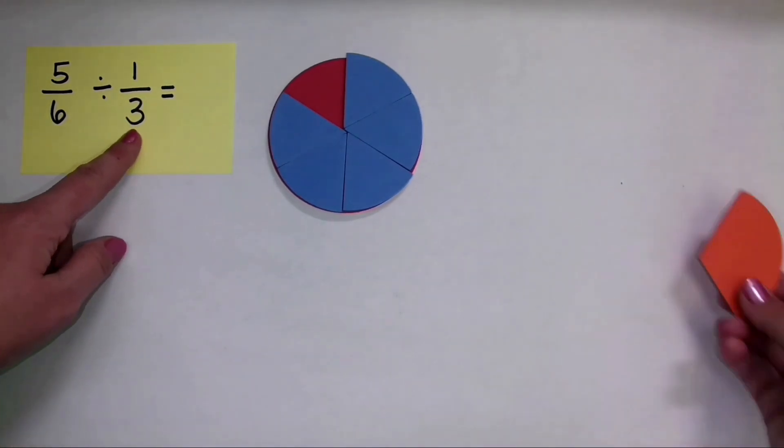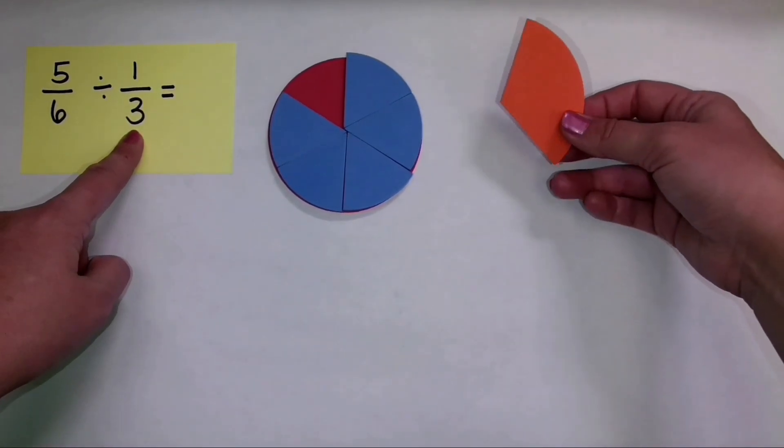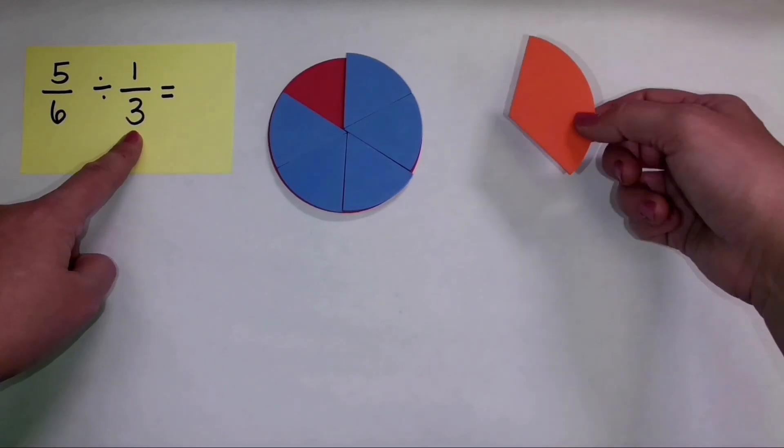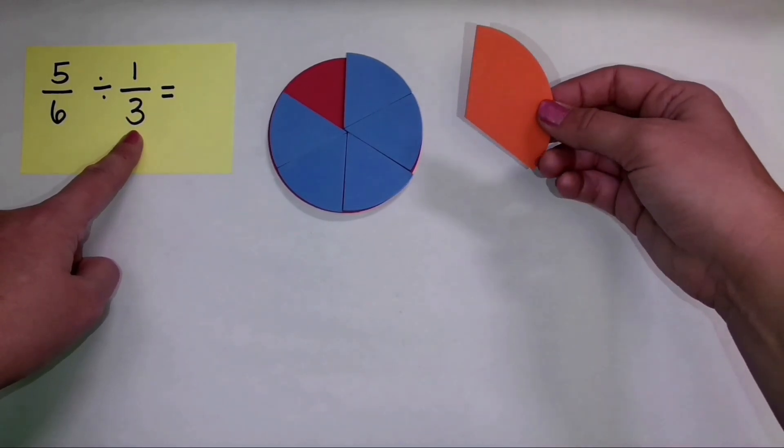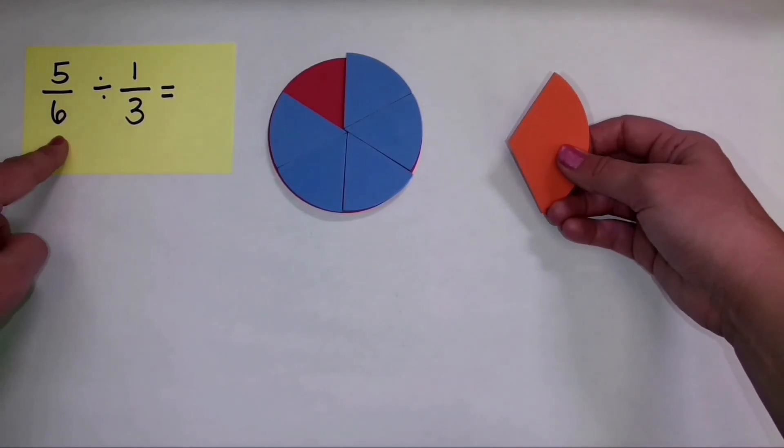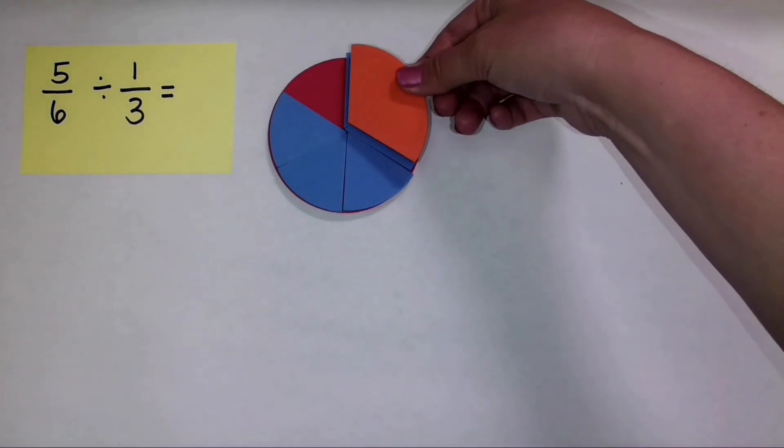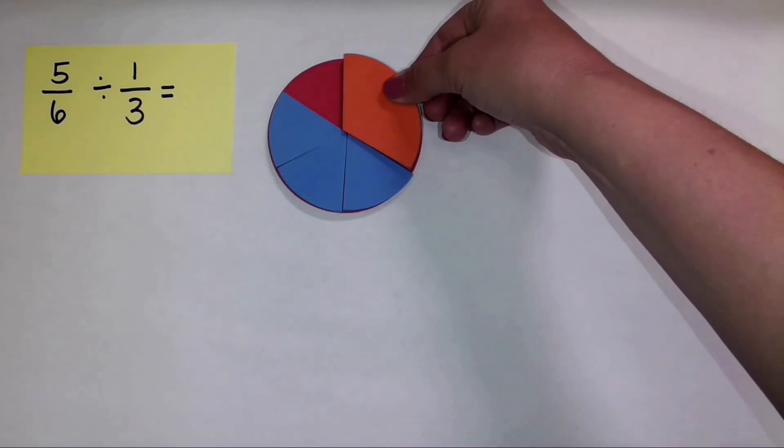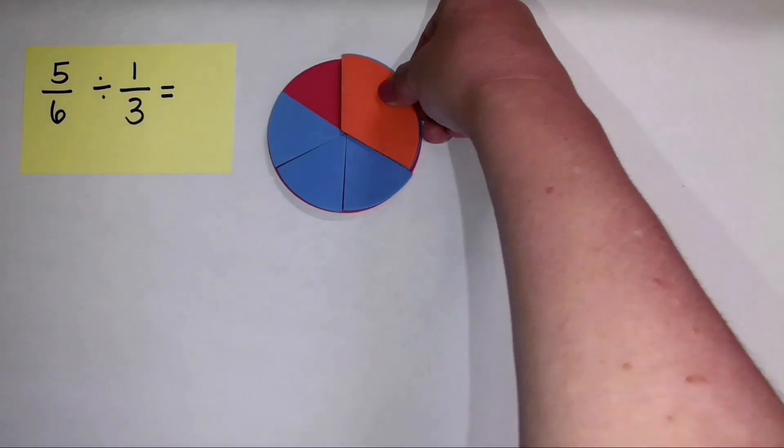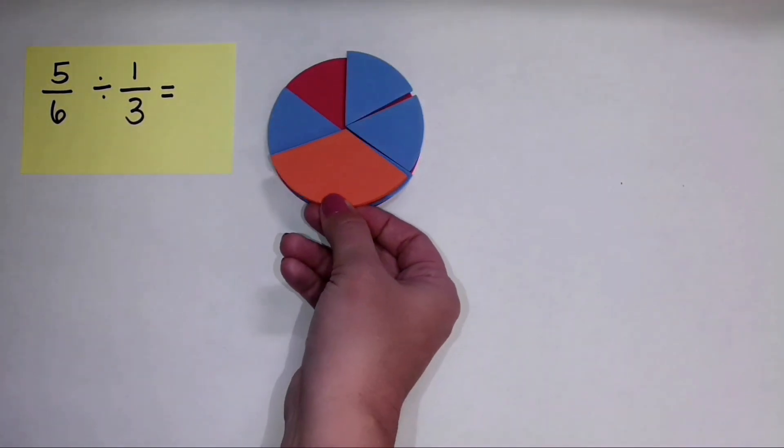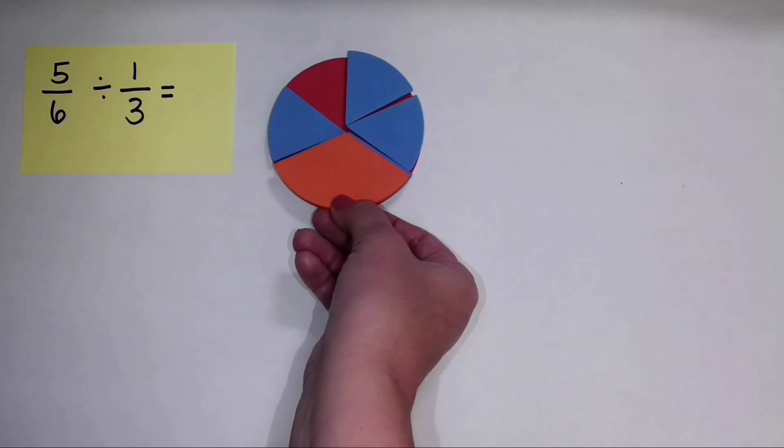Now, I want to figure out how many one-third pieces, so I'm going to go ahead and bring that in right here. How many one-third pieces we can make if I have five-sixths? So let's see. I can make one full one-third piece.